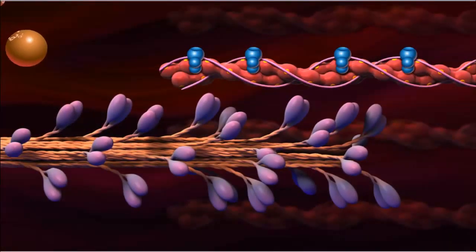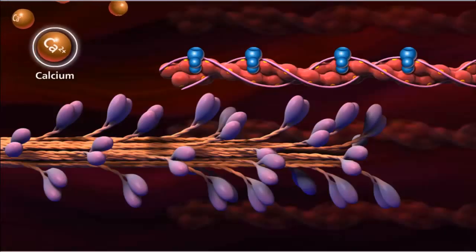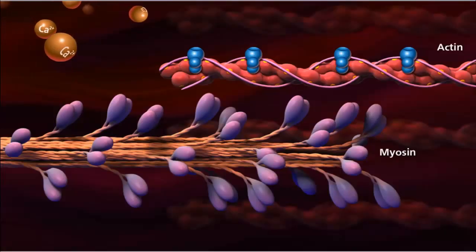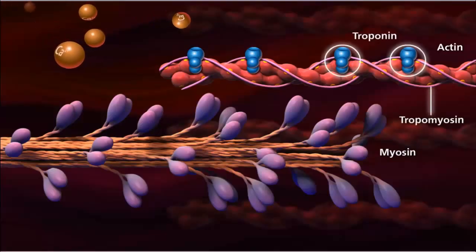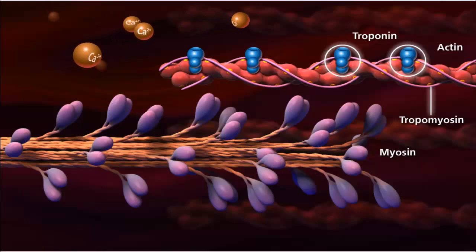Muscle contractions are controlled by the actions of calcium. The thin actin filaments are associated with regulatory proteins called troponin and tropomyosin. When the muscle is relaxed, tropomyosin blocks the cross-bridge binding sites on actin.